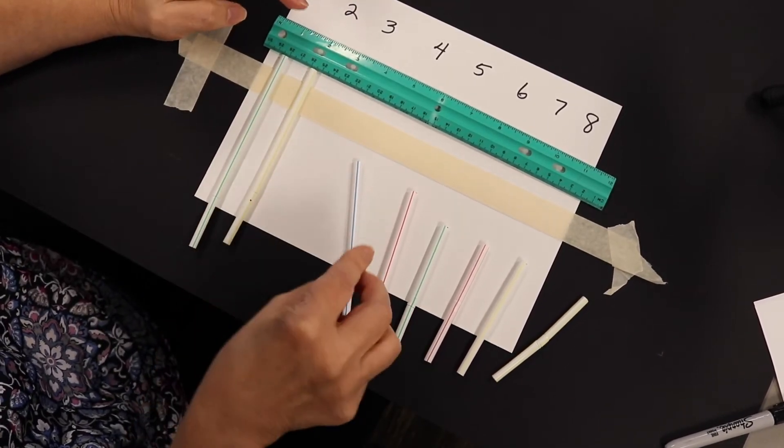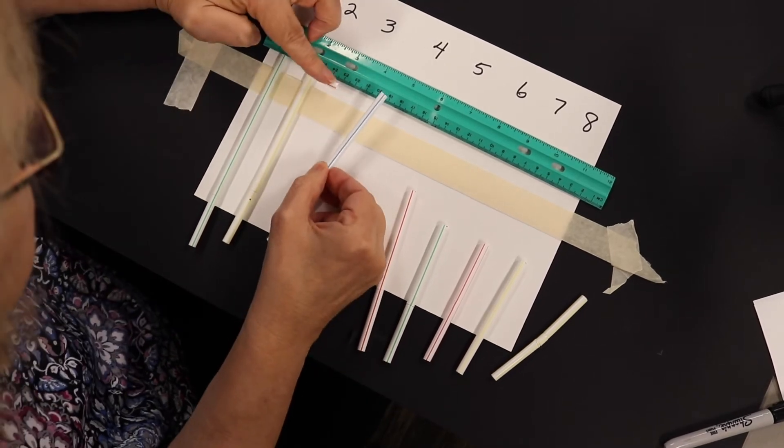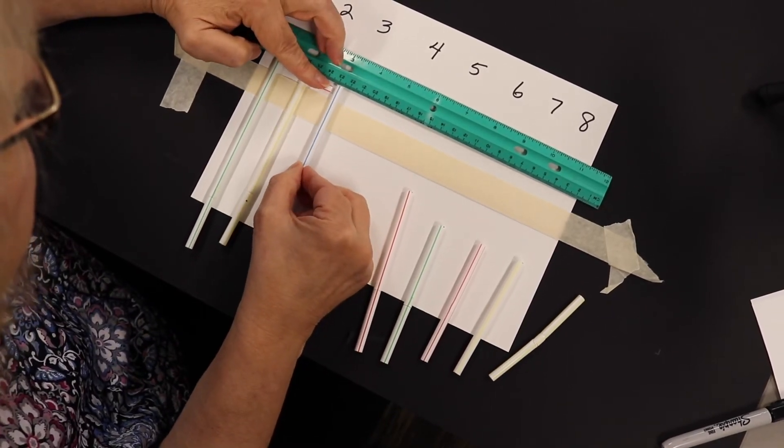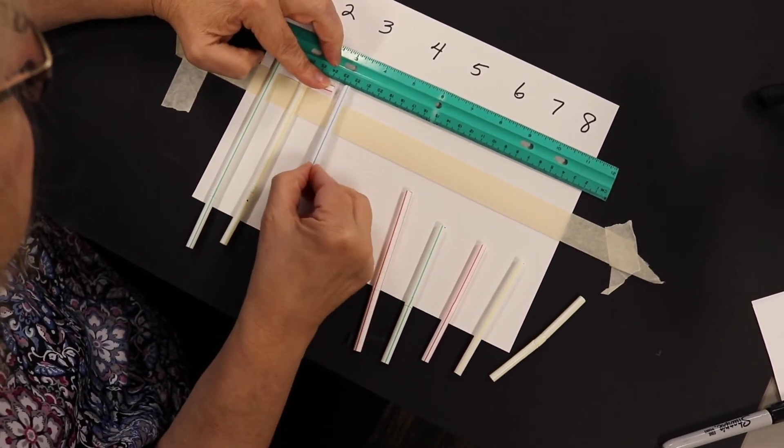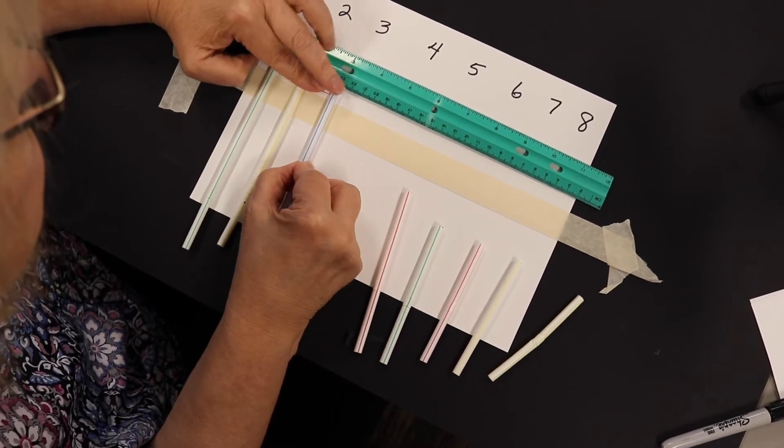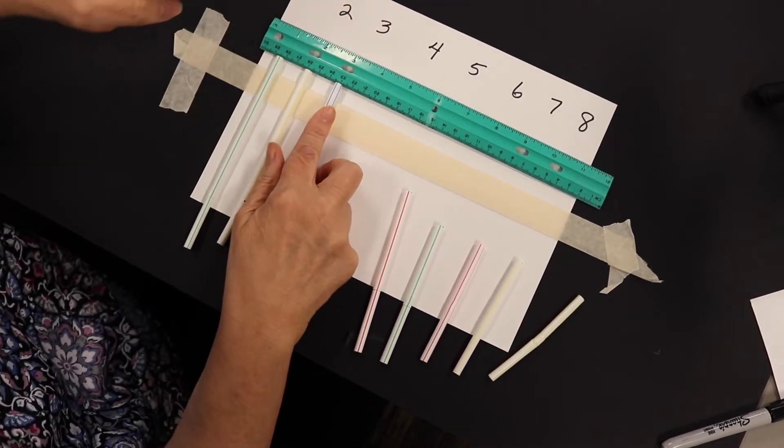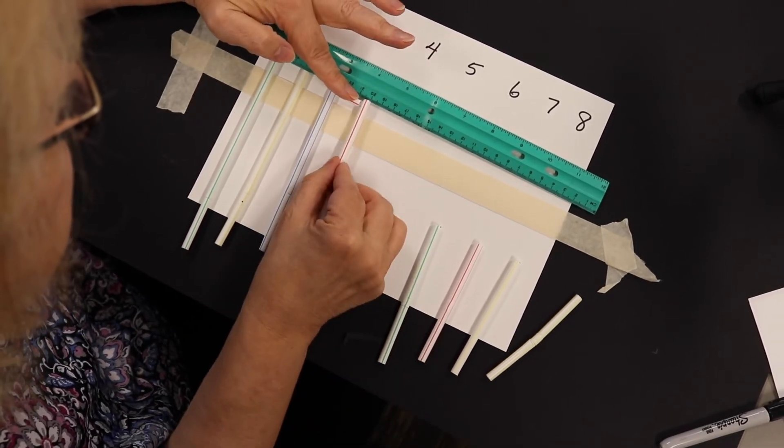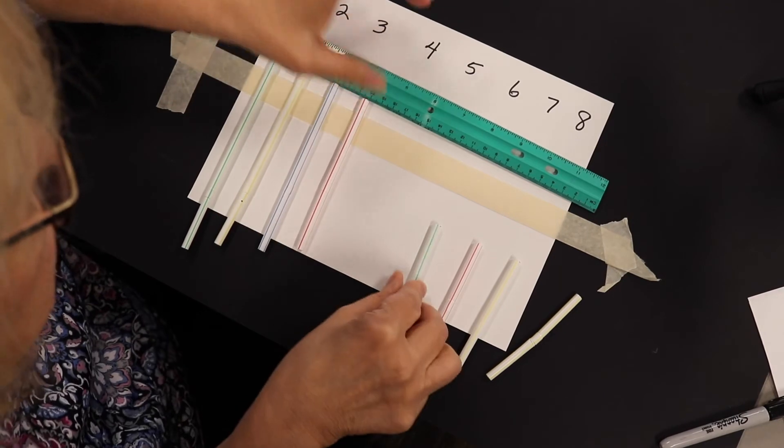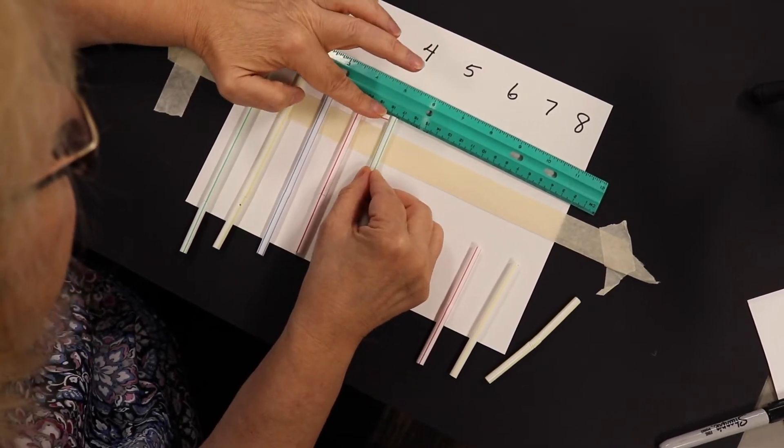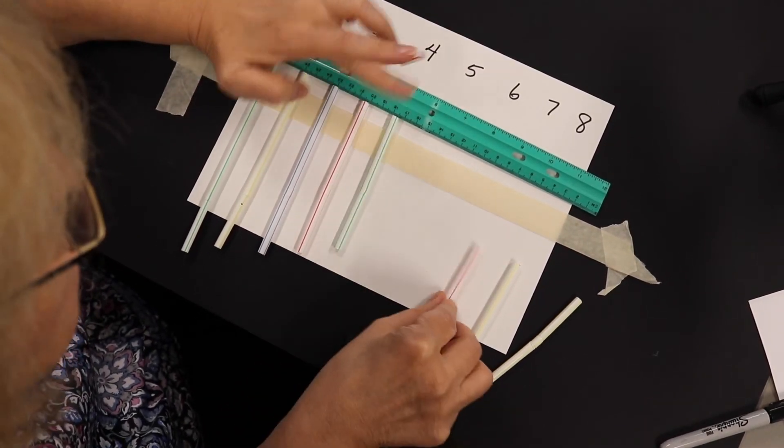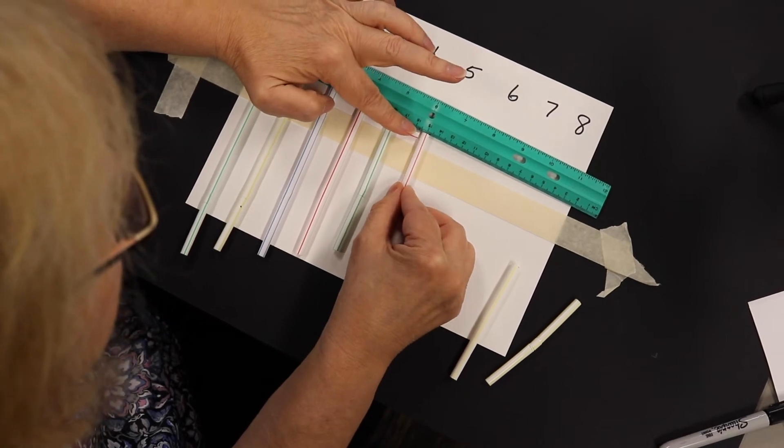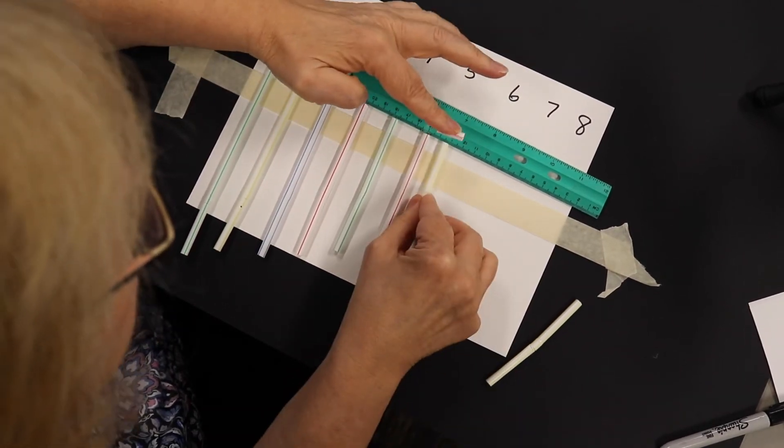Push it down on the tape. Then take your third one, use your spacer, line it up with the ruler, and place it down right on the tape. Then you're going to use your spacer for the next one, and so on until the end. So that you have all eight of them about two centimeters apart, and in the right order.